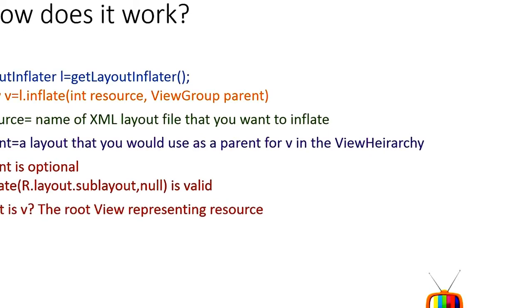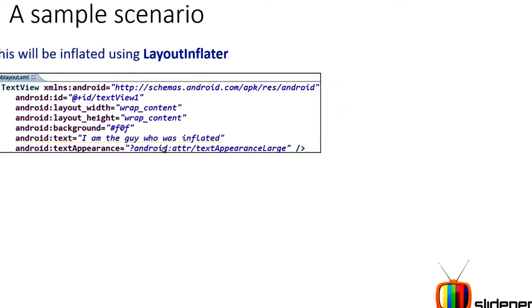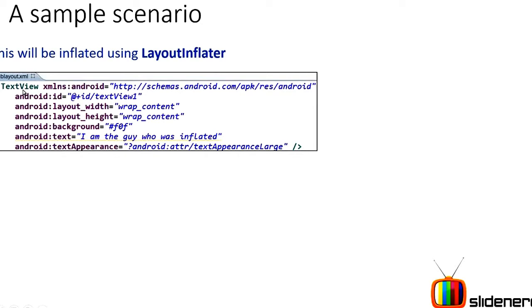V is the root view representing the resource. What does that mean? If your sub_layout.xml contains only a TextView, V is going to be equal to that TextView object in Java. If your sub_layout.xml contains a LinearLayout with a TextView inside it, V is going to be equal to the LinearLayout — it will be the root inside that XML file. Now let's take a simple example to understand exactly how LayoutInflater works.